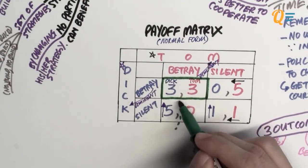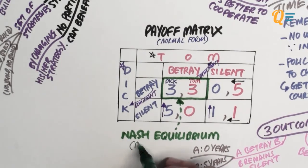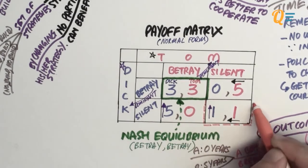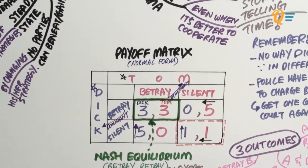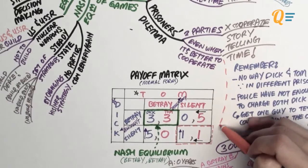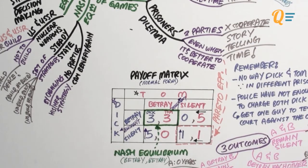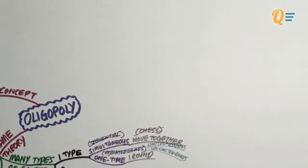This box is what we call the Nash Equilibrium — both Dick and Tom betraying each other. The Nash Equilibrium is also the box which has no arrows pointing away from it, and this is how you solve a game using the payoff matrix. Notice that both spending one year in prison is much better than both spending three years. This is where it's actually better for them to cooperate — what we call the Pareto Efficient point. But this is clearly a case where two parties do not cooperate even when it's better to do so — the Prisoner's Dilemma.